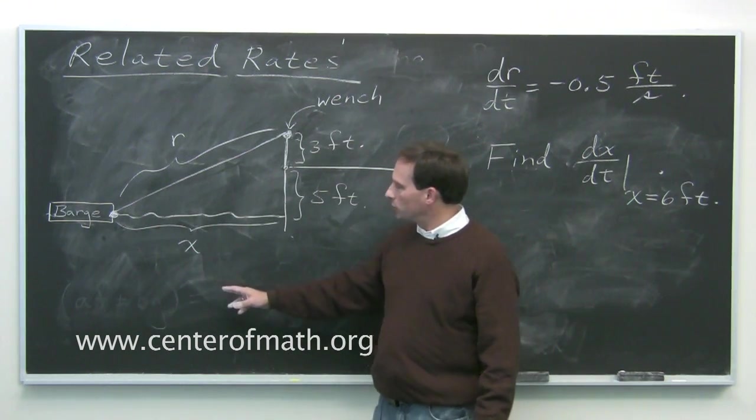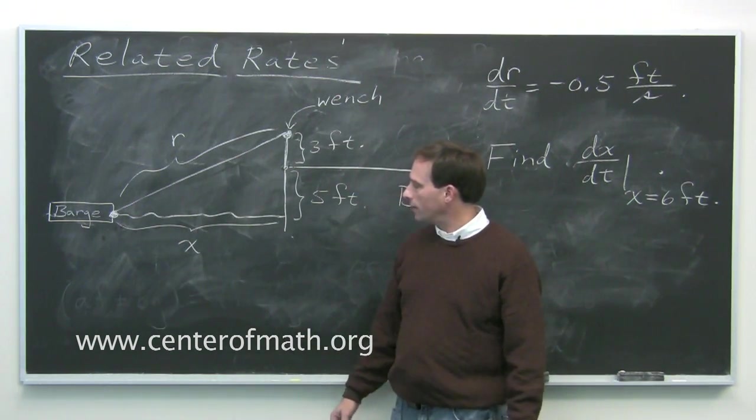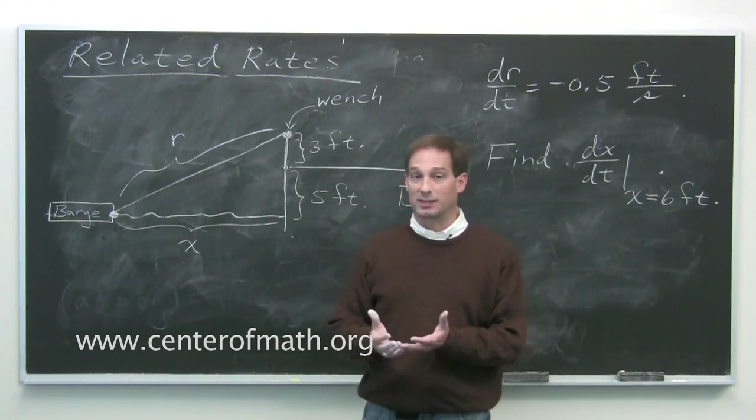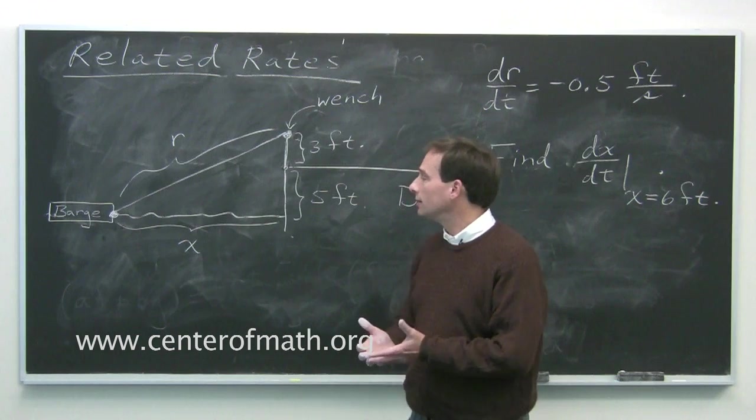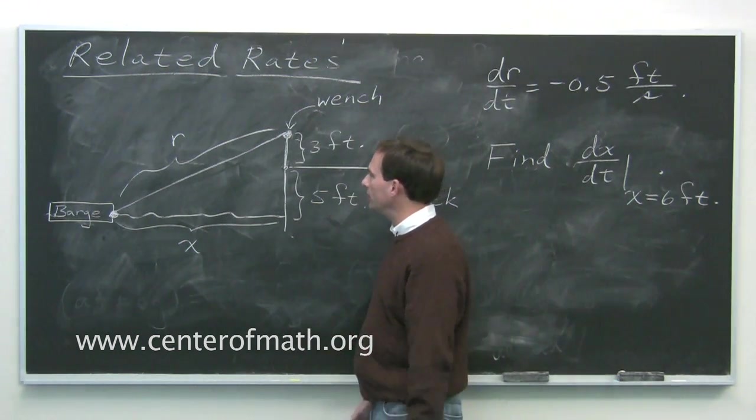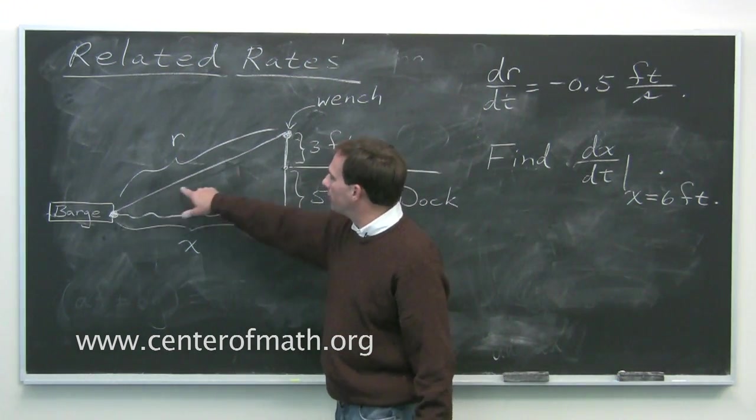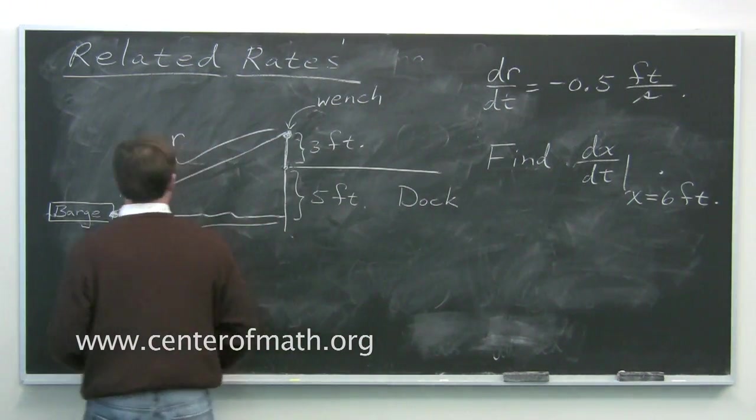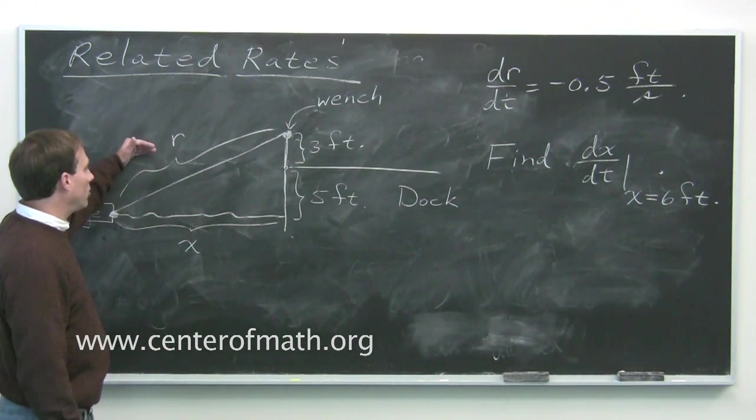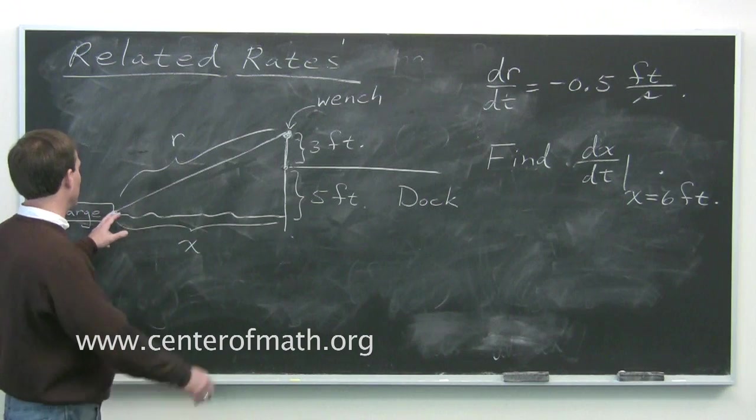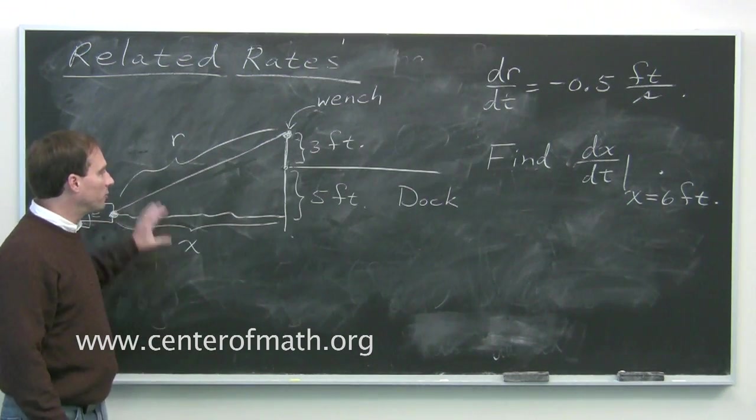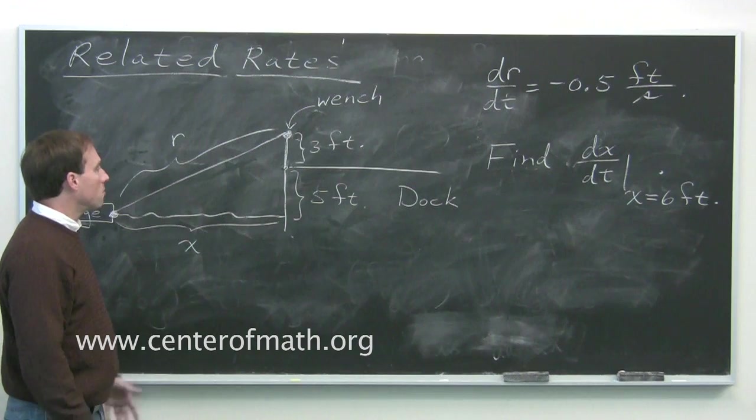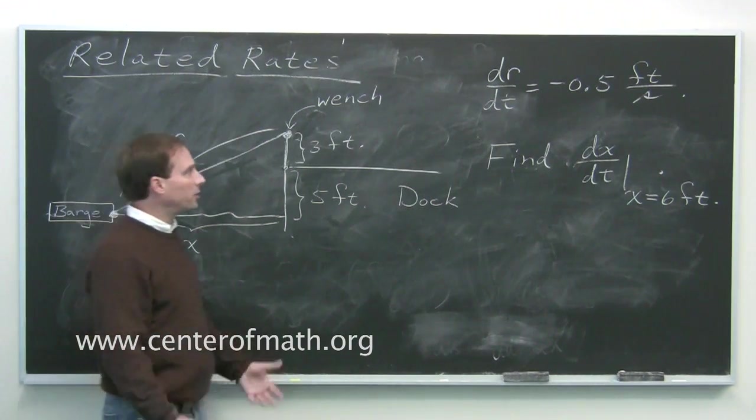All right. I've called the distance between the barge and the dock x. So x will be getting smaller. So its derivative with respect to time will be negative to indicate that that quantity is decreasing. I've called the length of the cable at any time r. Both r and x are functions of time. And r also is decreasing. The amount of cable between the barge and the top of the winch will be decreasing. So r will also be negative.